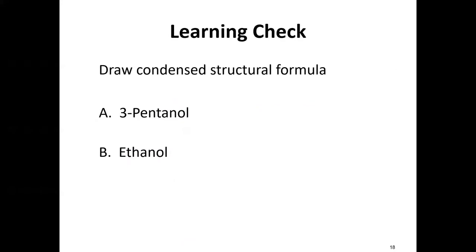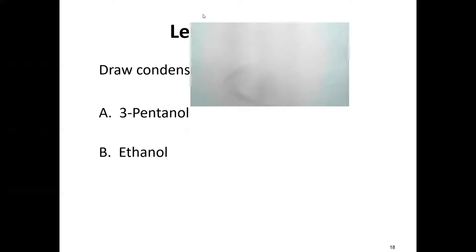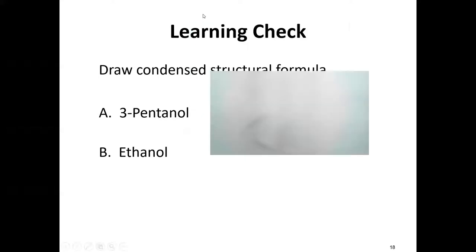Let's get back to drawing alcohols — whether a straight chain alcohol, a cyclic alcohol, or a phenol-derived one. For 3-pentanol: you don't see 'cyclo' and you don't see 'phenol,' so we assume it's a straight chain of five carbons connected together.